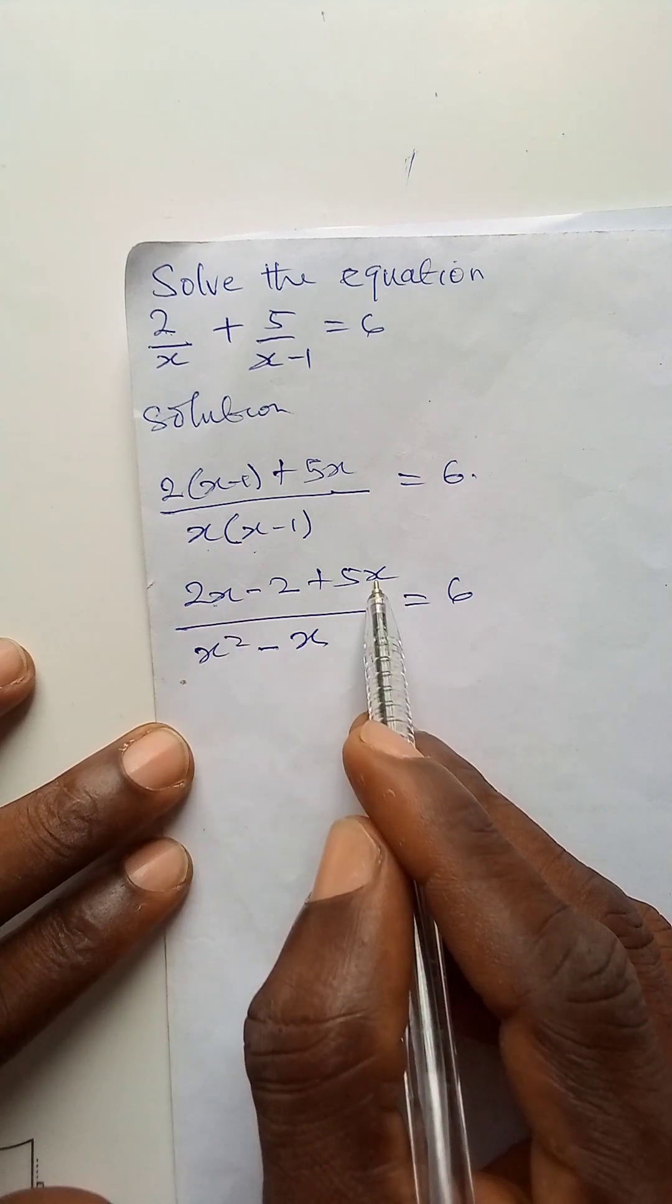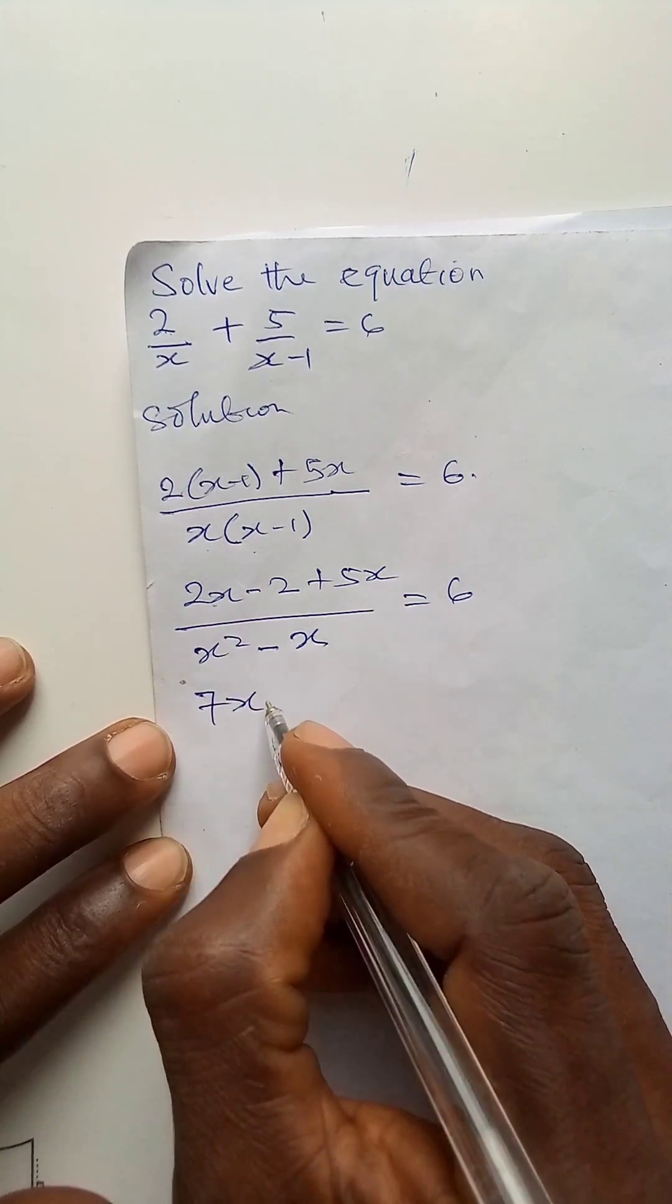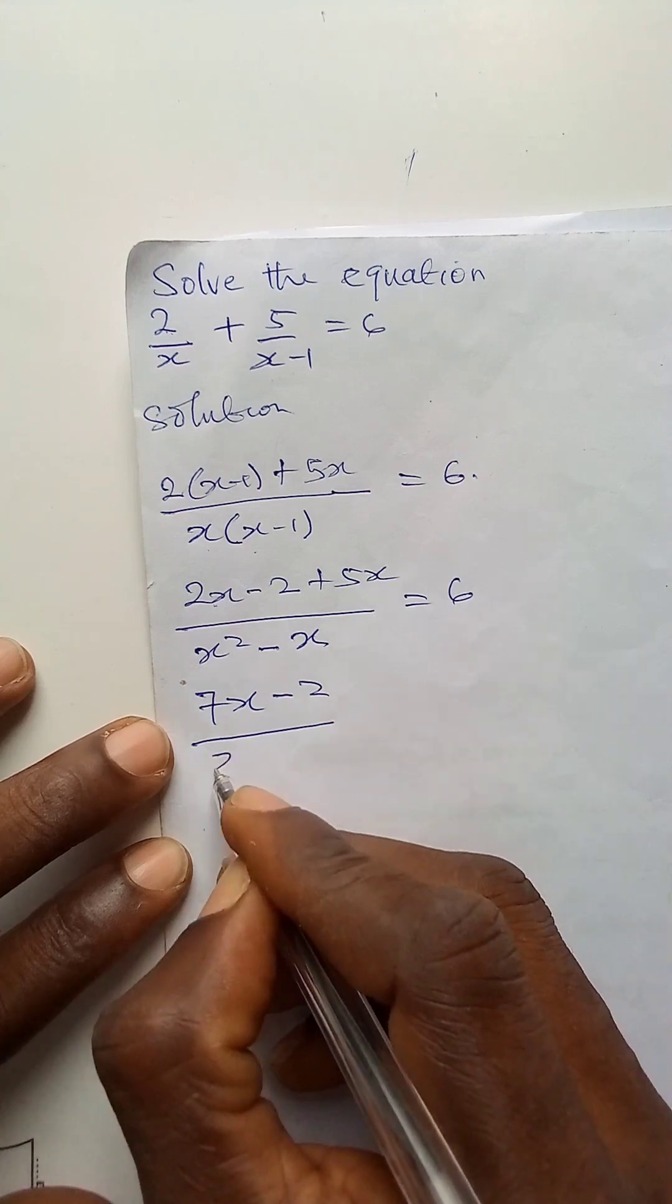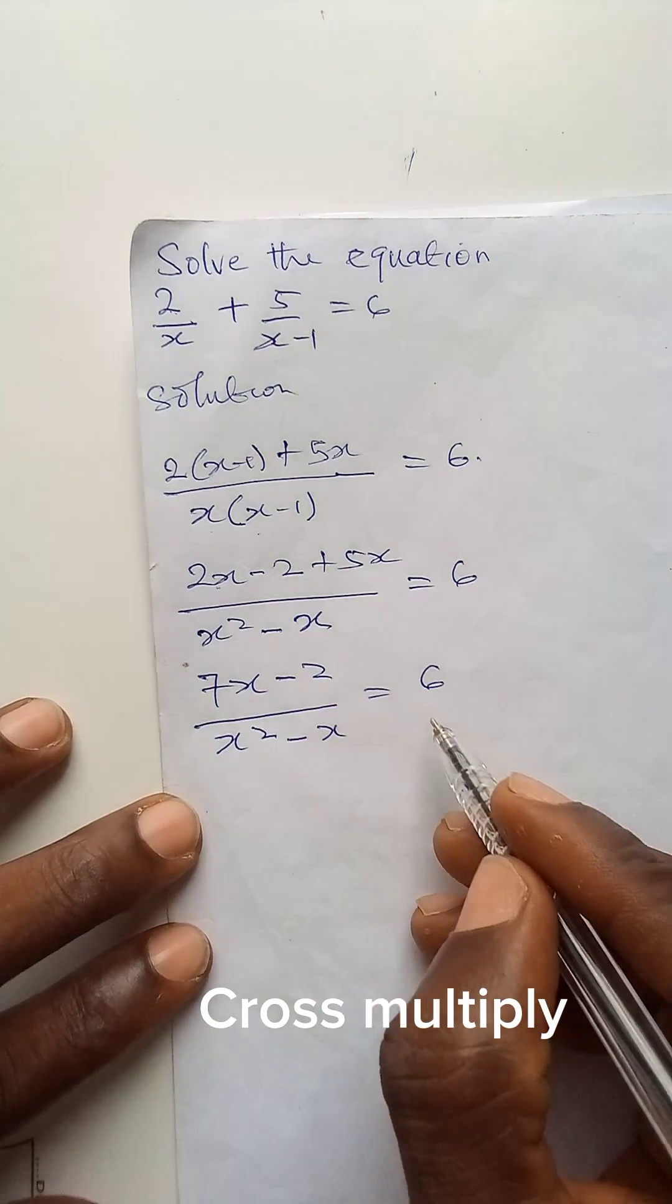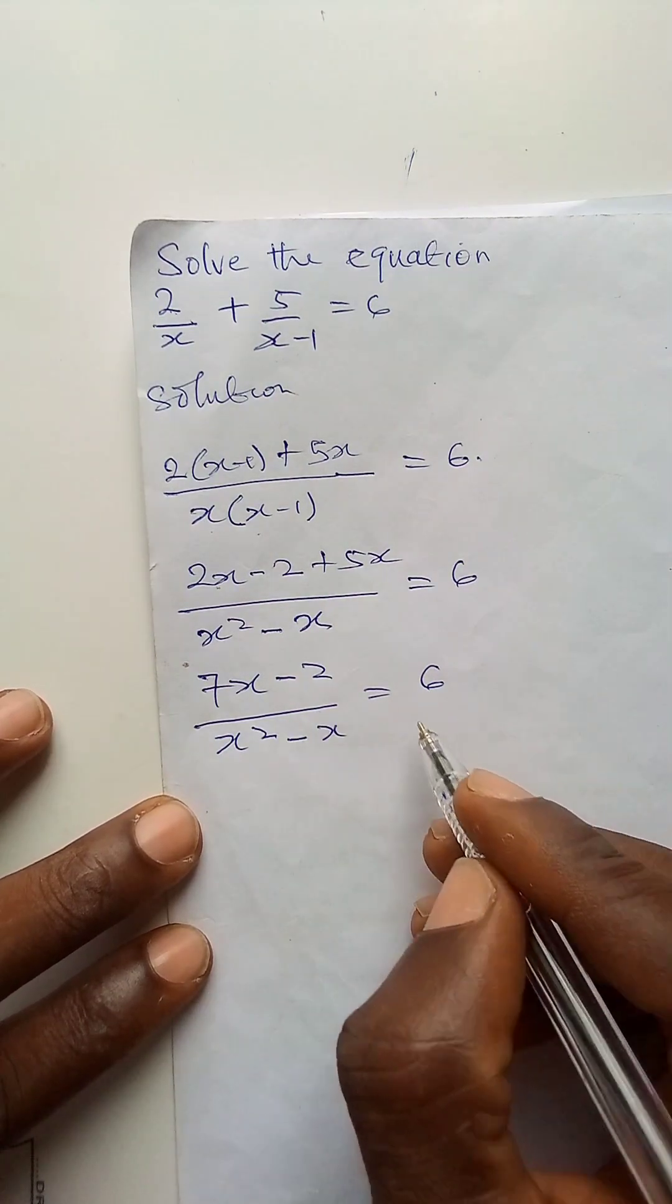Now, 2x plus 5x is 7x minus 2 over x squared minus x is equal to 6. I will now have to cross-multiply to clear fractions.